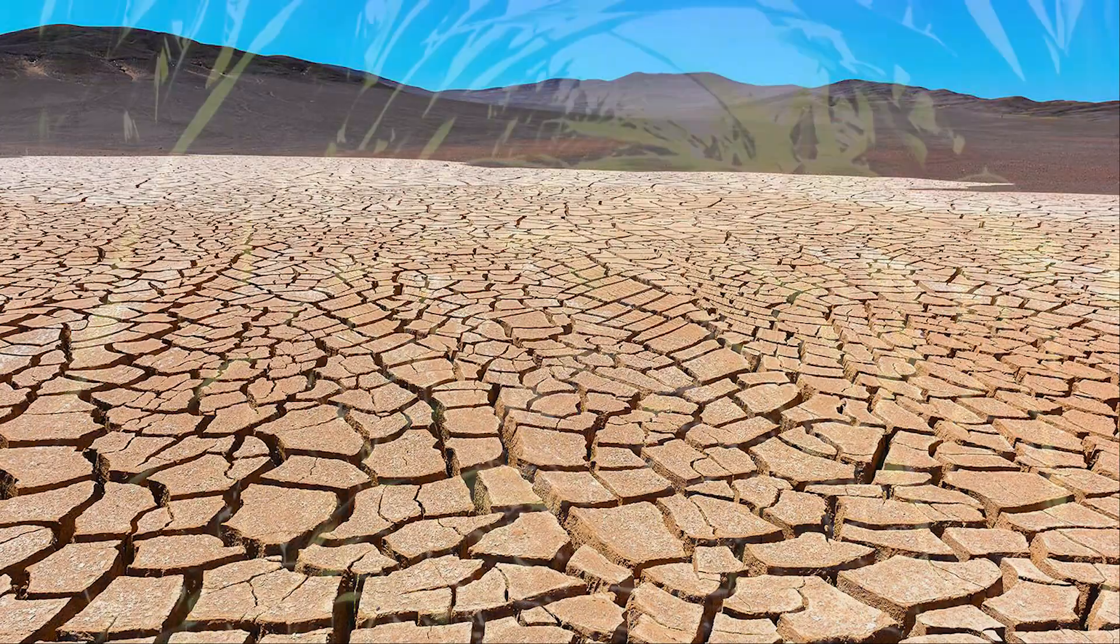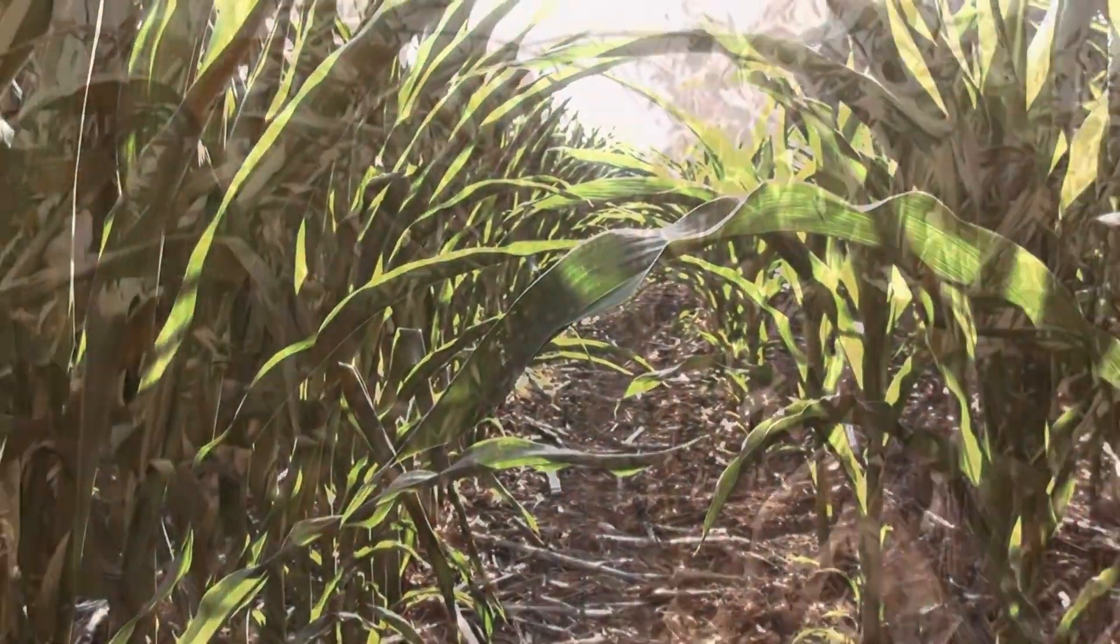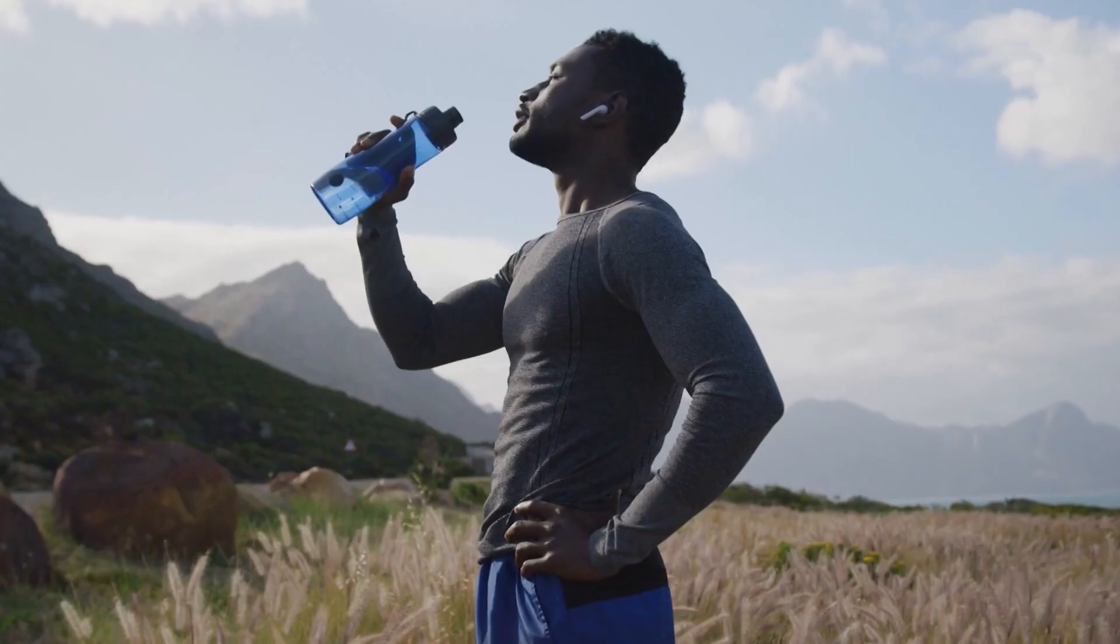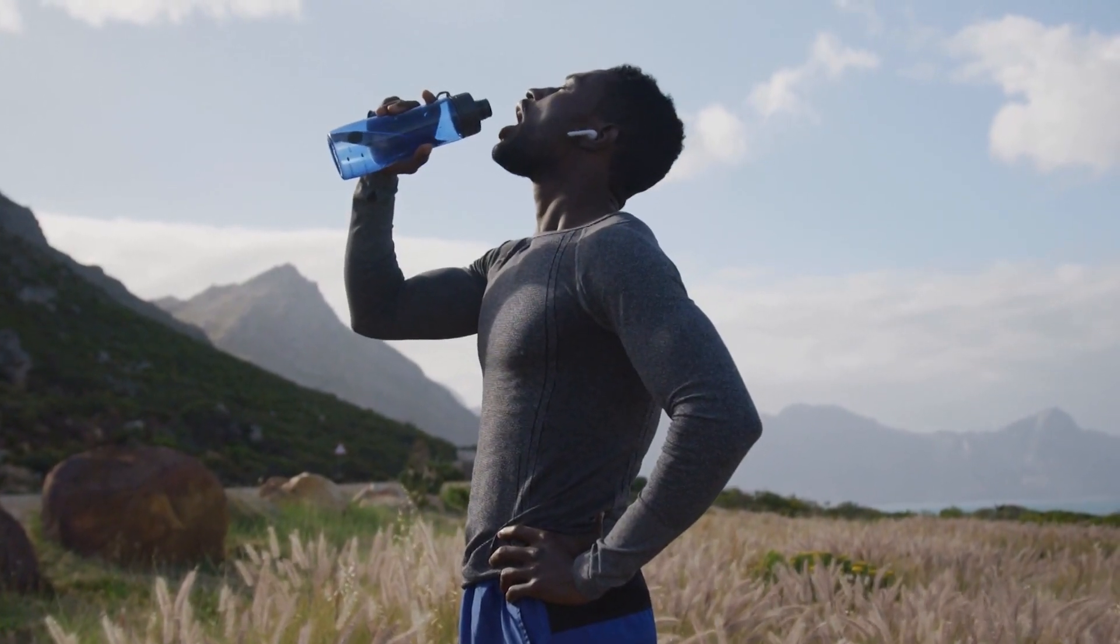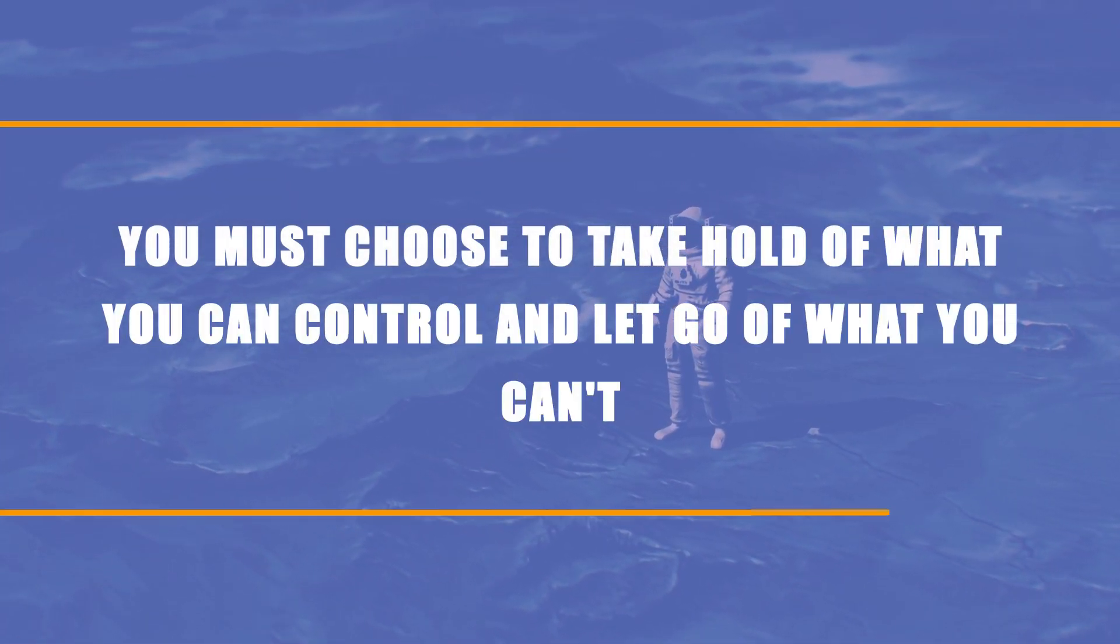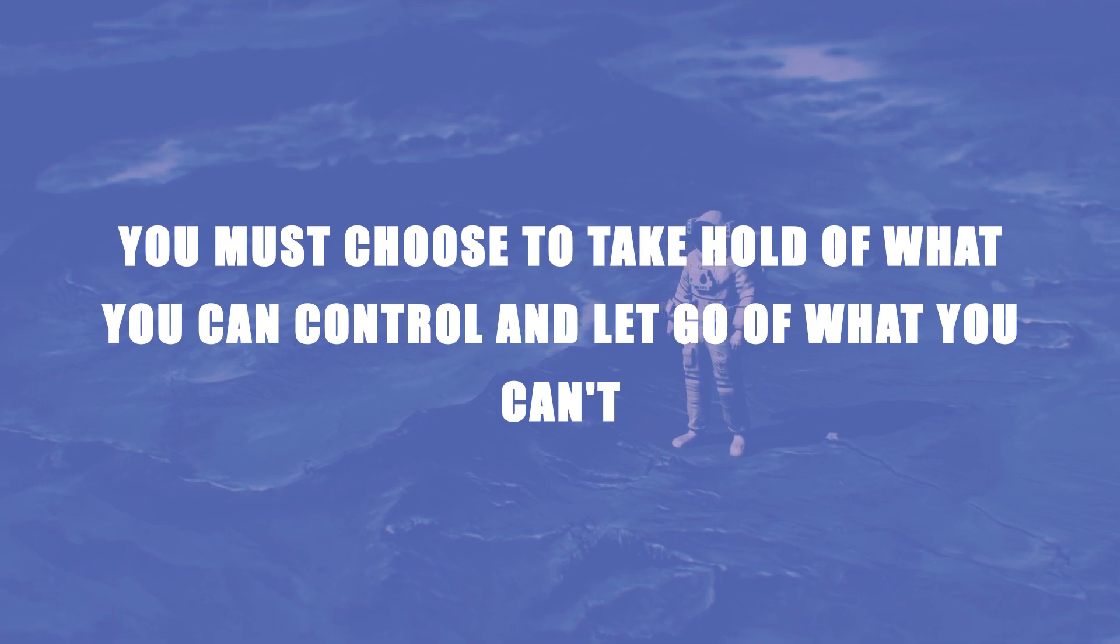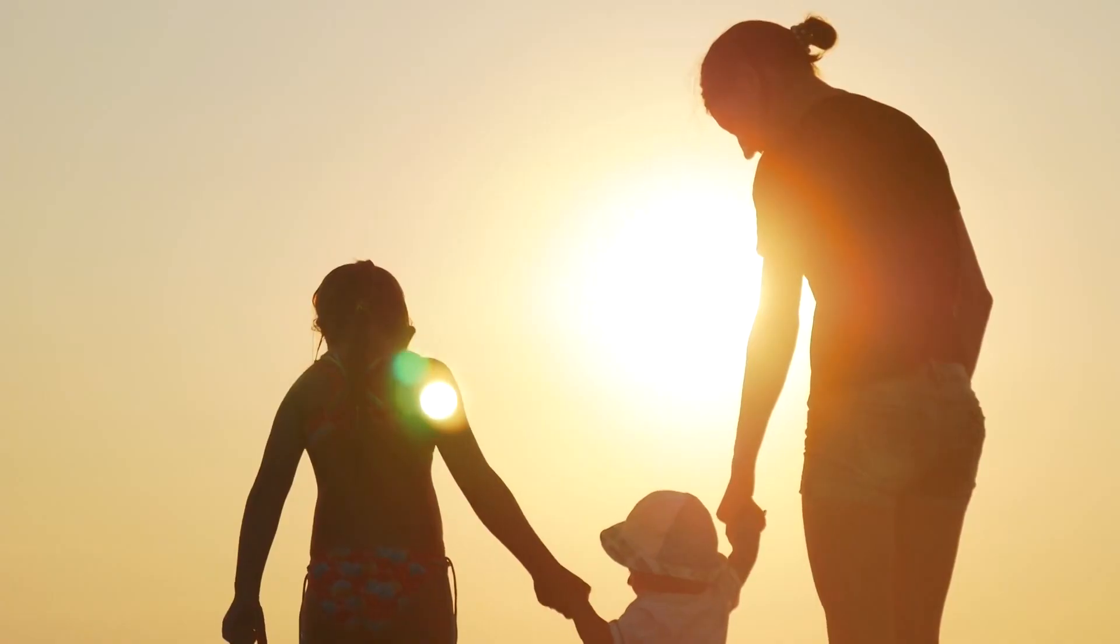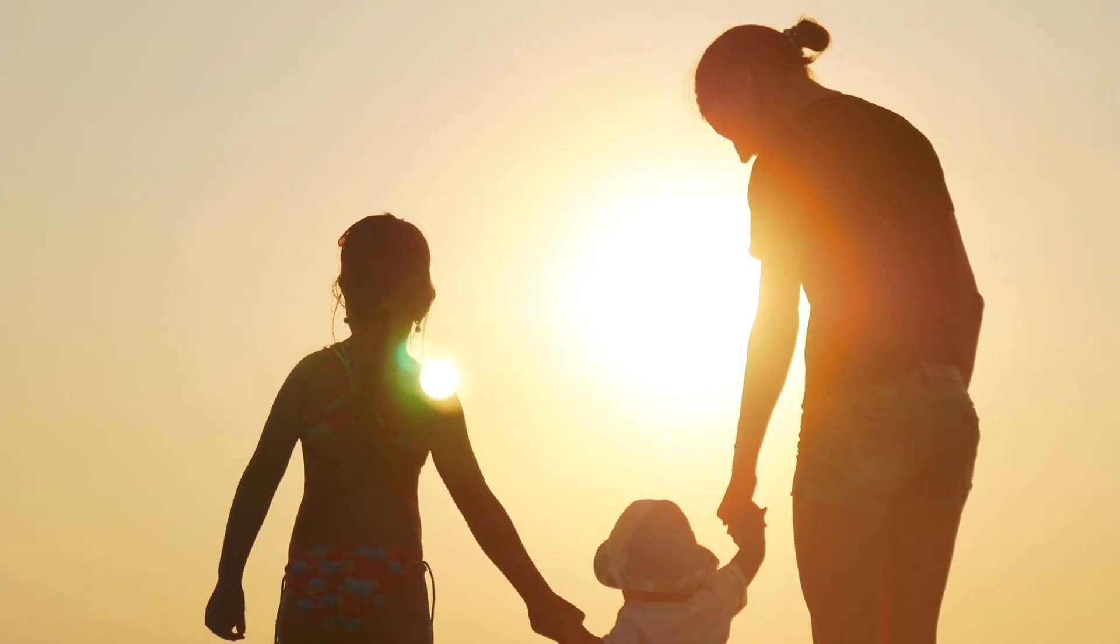The loss of habitat, for example, could cause a number of animal and plant species to go extinct. We could also use reusable shopping bags and water bottles instead of throwing them away after one use. As the old adage goes, you must choose to take hold of what you can control and let go of what you can't. There are countless potential threats to the survival of humanity, but all we can do is focus on what we can influence.